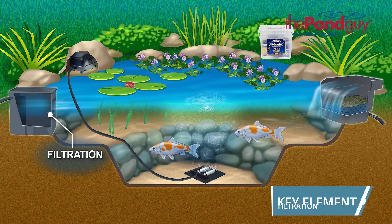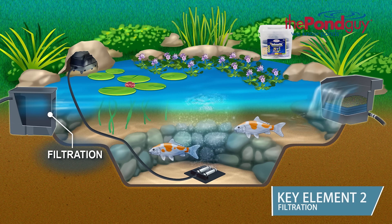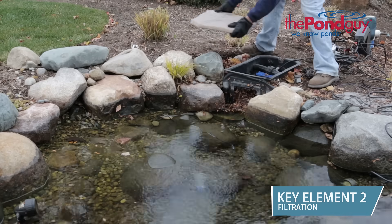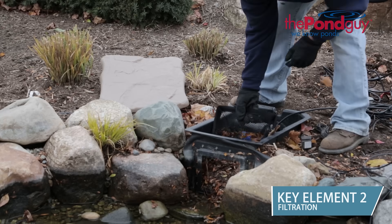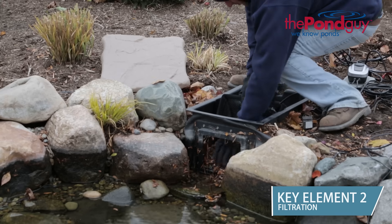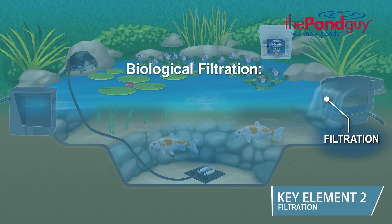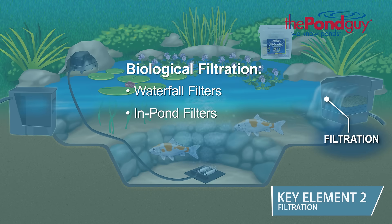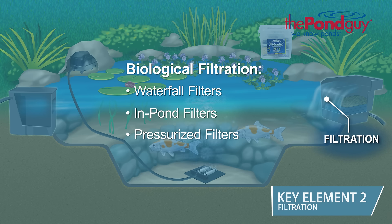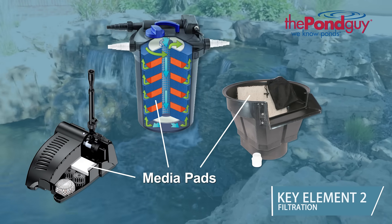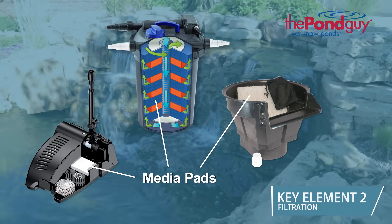The next key element is filtration. Filtration does two very important things to encourage the nitrogen cycle. First, mechanical filtration such as skimmers, filter brushes, and foam pads limit the amount of organics that accumulate in the water garden by capturing visible debris like floating leaves, twigs, and fish waste. They can then be easily removed from the pond before they begin to decay and create more ammonia. Second, biological filtration such as waterfall filters, in-pond filters, and pressurized filters eliminate invisible waste like ammonia by introducing a living tool — nitrifying bacteria. Biological filters contain filter media such as filter pads that provide enormous amounts of surface area for nitrifying bacteria to grow.